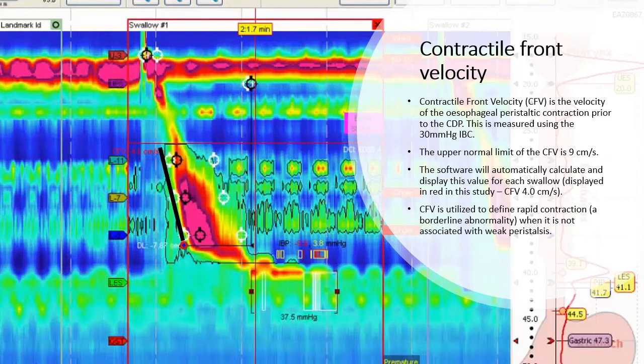The software will automatically calculate and display this value for each swallow. Displayed in red in this study is the contractile front velocity of 4 cm per second. The CFV is utilized to define rapid contractions, a borderline abnormality, when it is not associated with weak peristalsis.